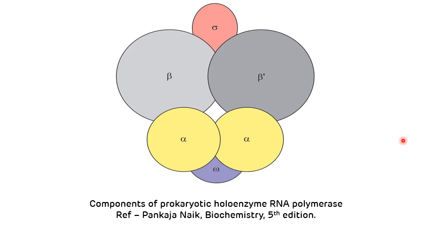If a sixth subunit — called the sigma factor — is attached to the core enzyme, it is called the holoenzyme or complete enzyme, which is the active RNA polymerase. So the active RNA polymerase or holoenzyme consists of the core enzyme plus the sigma factor. This RNA polymerase enzyme does not have any proofreading activity or exonuclease activity.